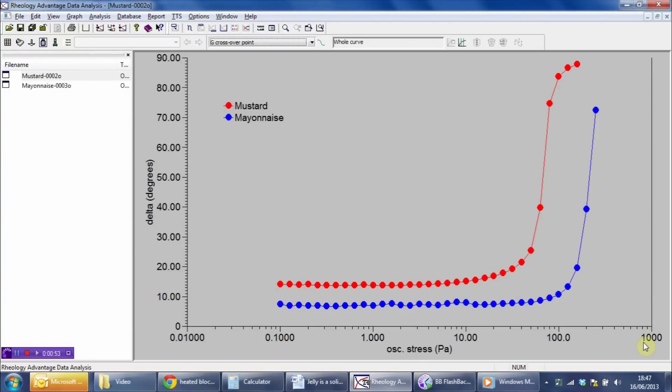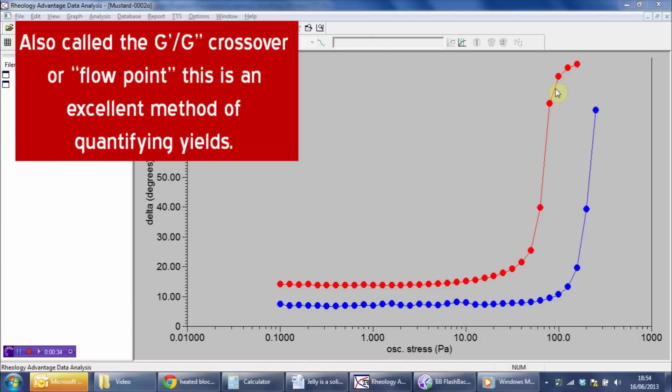However, undeniably, a single value for yield stress would be very useful for us from the point of view of comparing products. So, one method that we can use for getting a simple, single number yield stress value is to interpolate the stress at which the line crosses the 45 degree phase angle threshold. That is effectively the point at which the sample makes the transition from being what we call elastic dominant, i.e. more solid than liquid, to being viscous dominant, more liquid than solid.